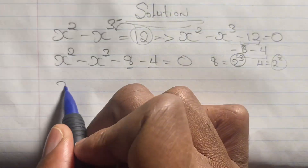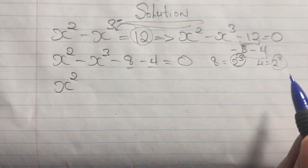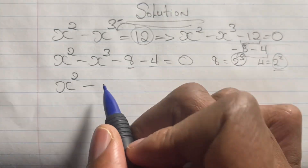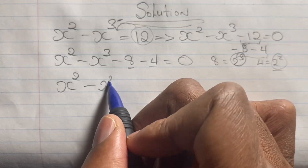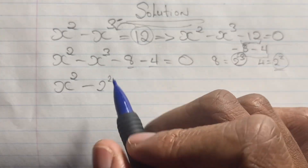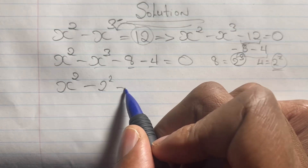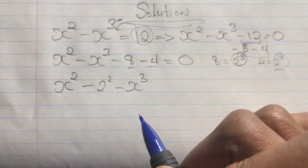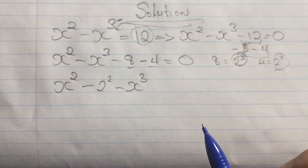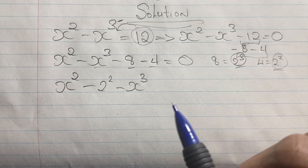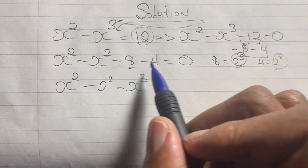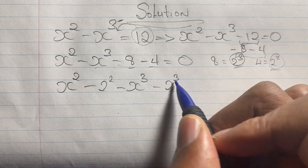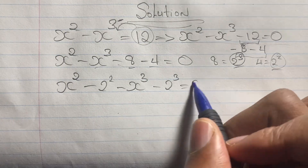We pair x squared with negative 2 squared, giving x squared minus 2 squared. Then we pair x cubed with 2 cubed, giving us x squared minus 2 squared minus x cubed minus 2 cubed equals 0.